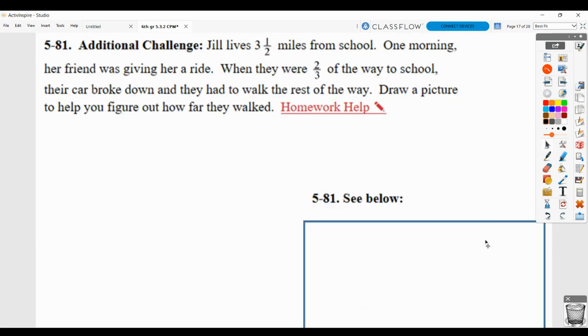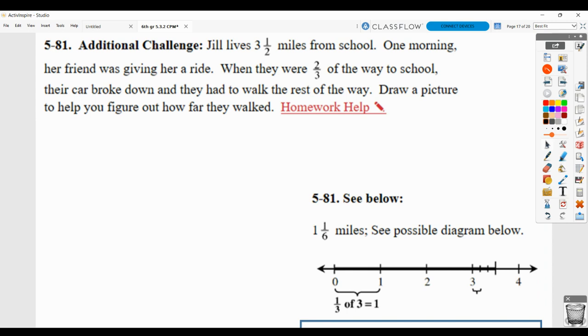Here we talked about the fact that you should have a basic sketch. This was the diagram they kind of drew. So this is showing the total distance, 0 to 3.5. This would be like her house. Distance between her house and school. And when she was two-thirds of the way, the car broke down and they had to walk the rest of the way.